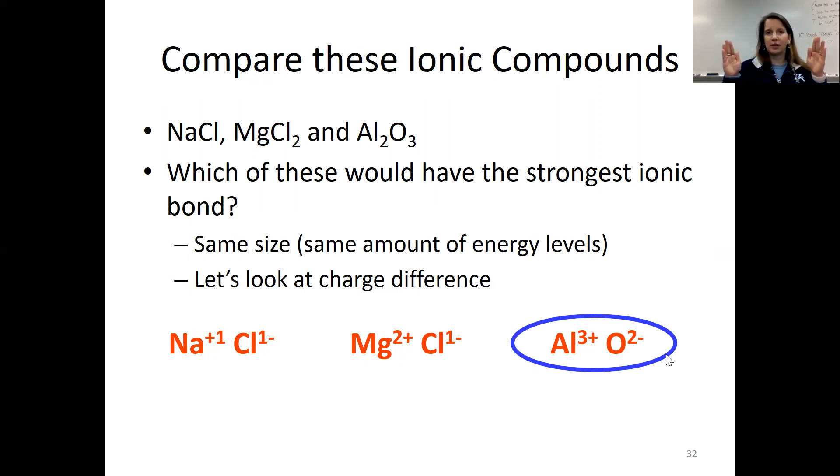I kind of picture it like a little number line in my head. Whereas sodium chloride is going from +1 to -1. Magnesium chloride is going from +2 to -1. Aluminum oxide is going from +3 to -2. That's a big charge difference holding those ions together. And that's why Al2O3 would be the strongest ionic bond.